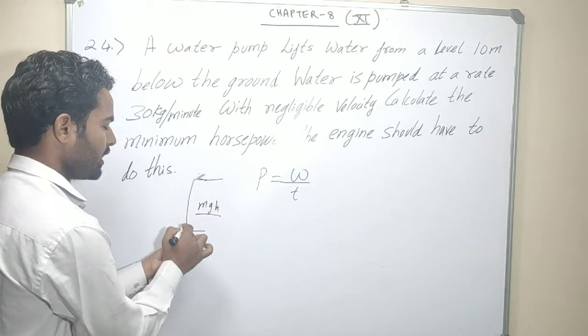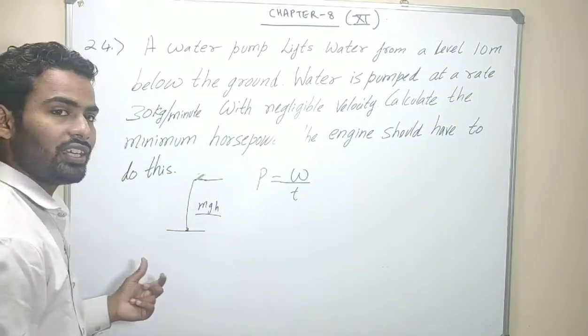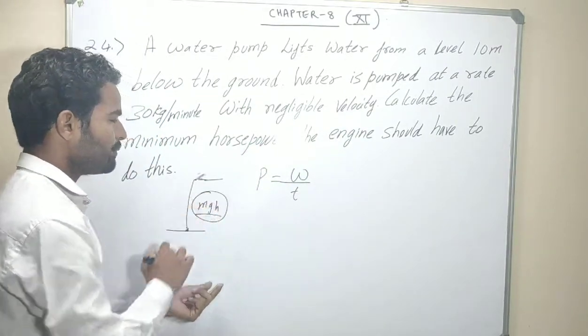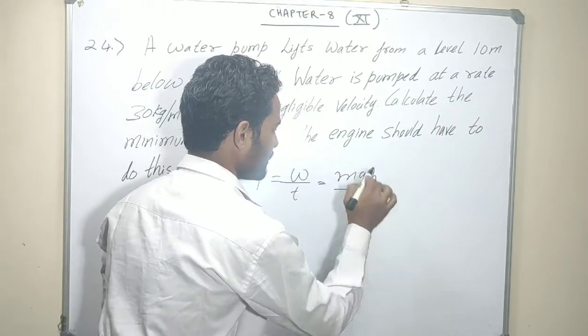Right. Ab yaha kinetic energy, yaha pe velocity 0, yaha pe velocity negligible bola hai. To kinetic energy ka koi role hi nahi hai. To work done kitna hai jayega, MgH. To simple yaha pe put kya jate, work done hagi apna MgH upon T.